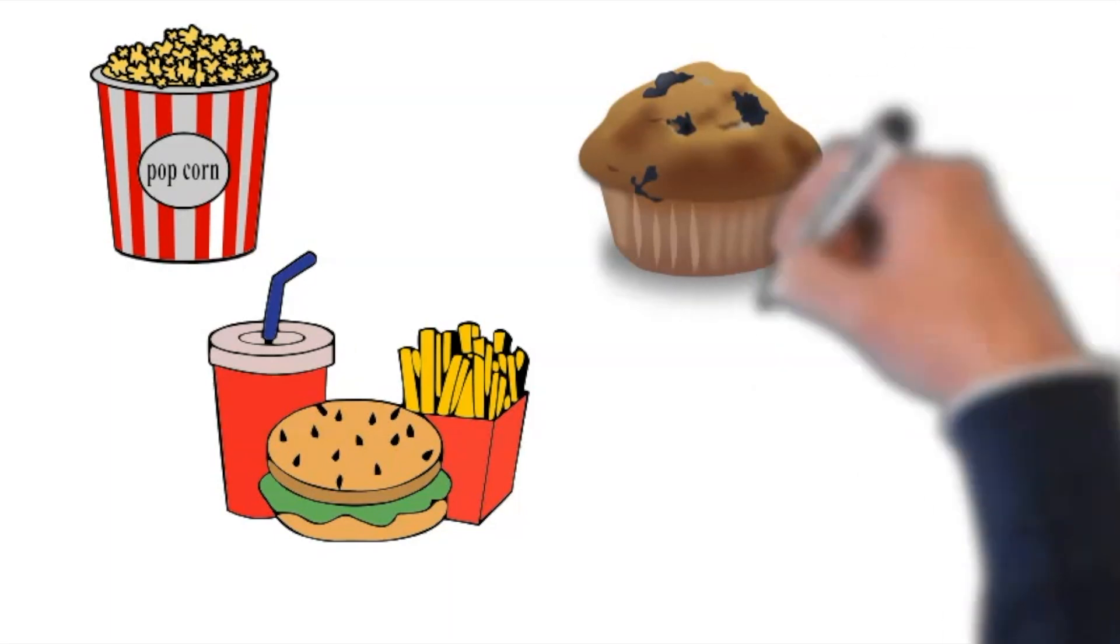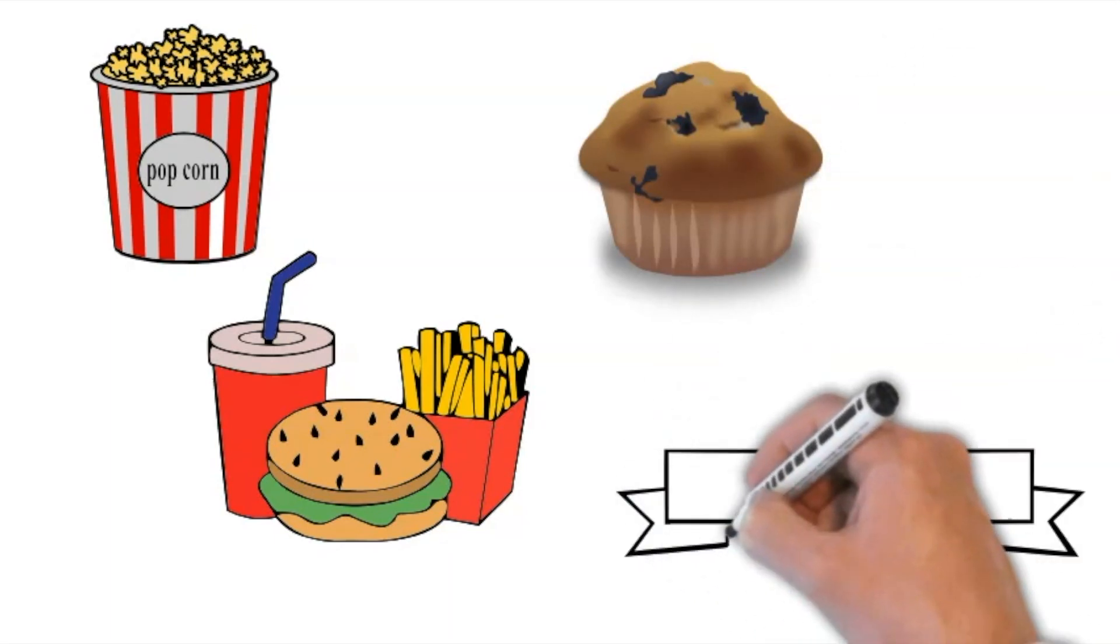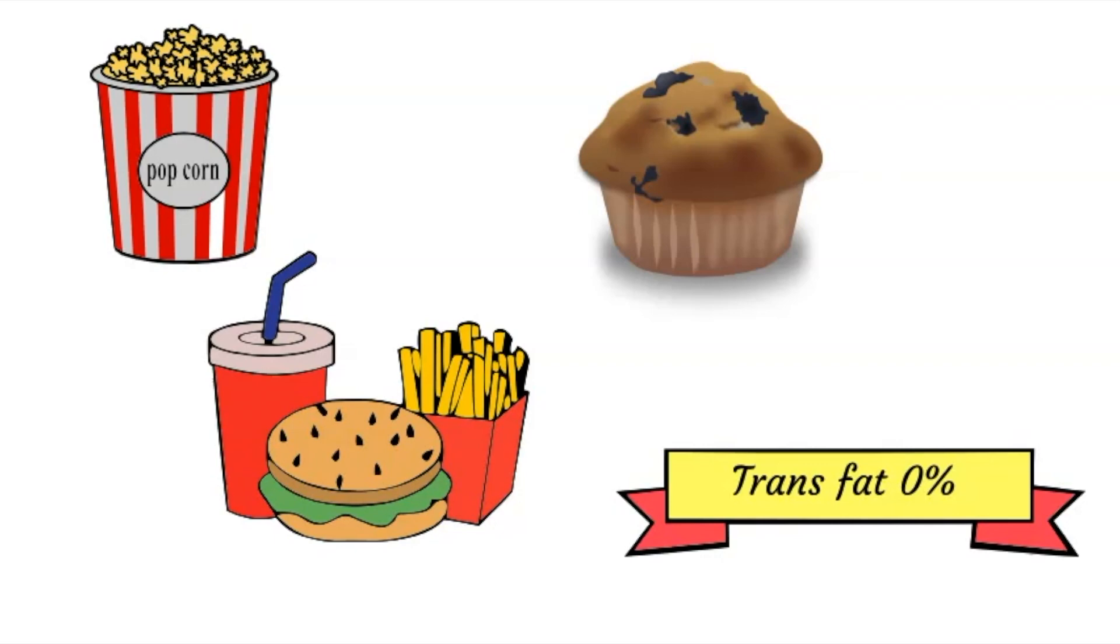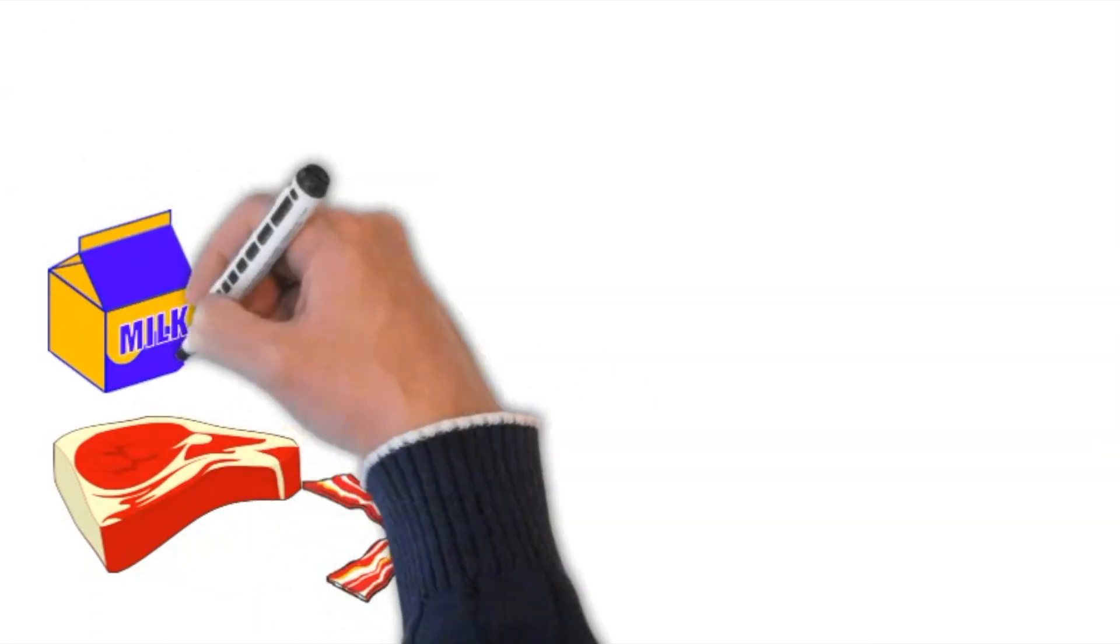The second type is saturated fat. This type of fat you find in red meat, dairy products like whole milk, cheese, and butter. This type can affect your cholesterol level and is best eaten in small amounts.